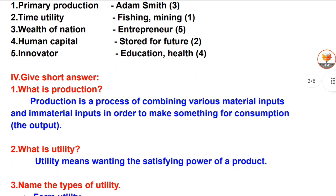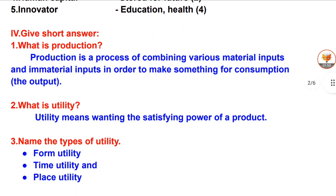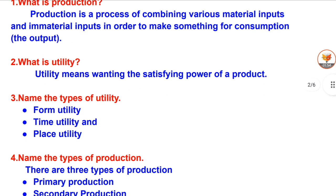Give short answers. Question 1: What is production? Production is a process of combining various material inputs and immaterial inputs in order to make something for consumption — the output. Question 2: What is utility? Utility means the want-satisfying power of a product.